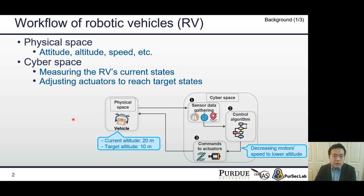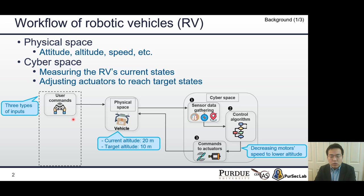Three types of inputs can affect the RV's physical state. First, user commands, such as turning left or turning right. Second, environmental factors, such as temperature or air pressure. Third, configuration parameters for control algorithm.